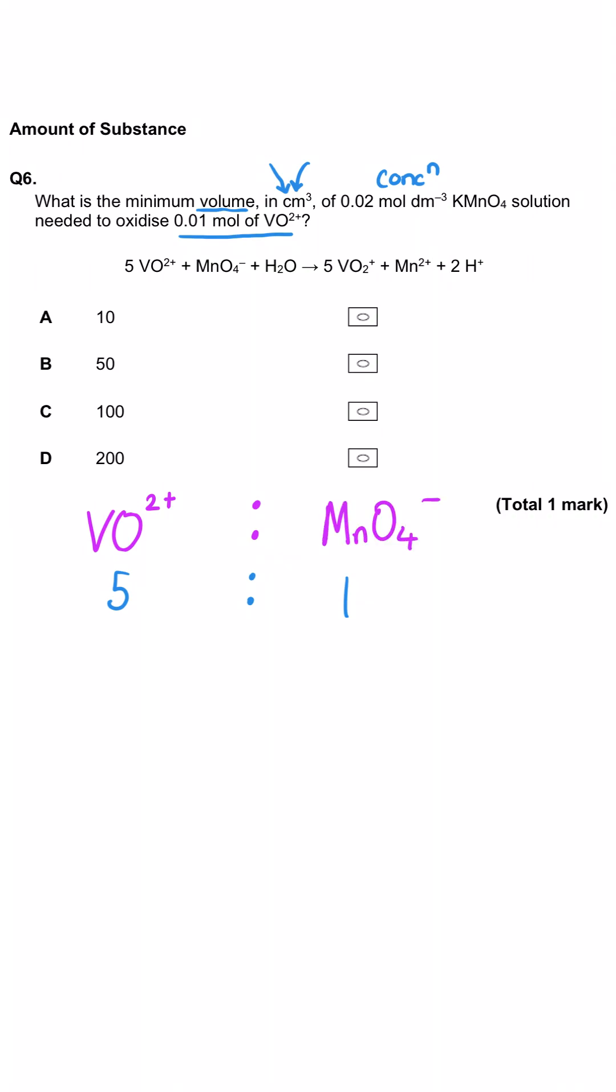We know that we've got 0.01 moles of VO2 plus, and so that means the KMnO4 is going to be 5 times smaller. So we need to divide that moles by 5, and we get 0.002. That's the moles.